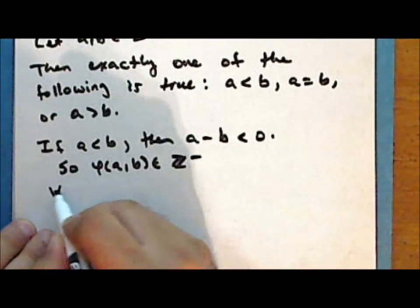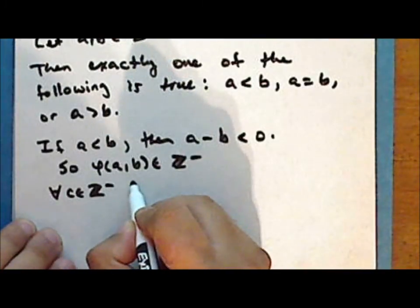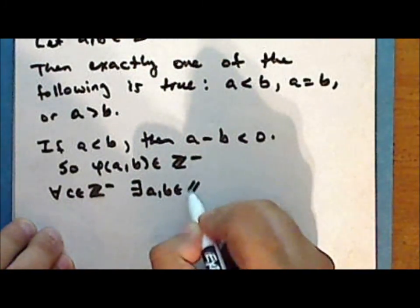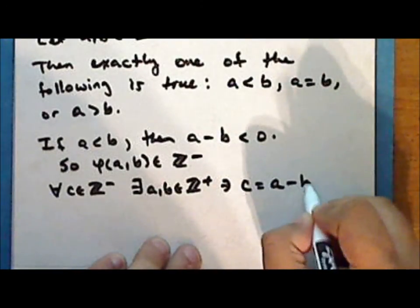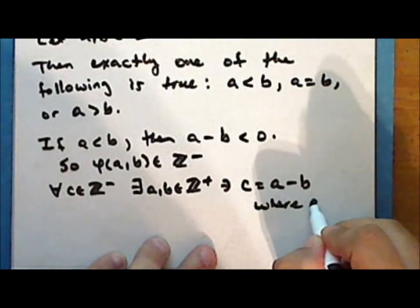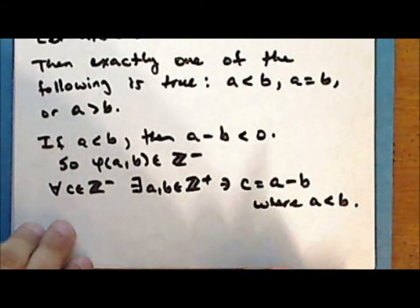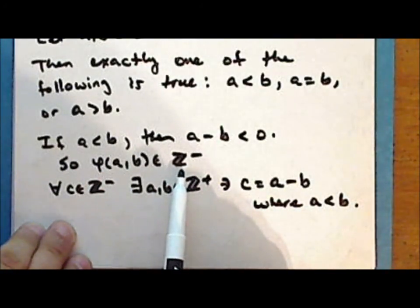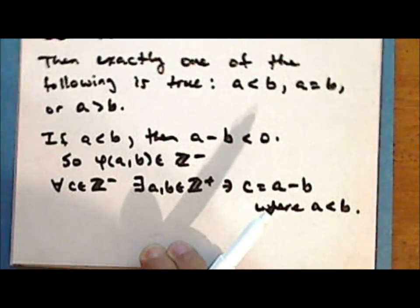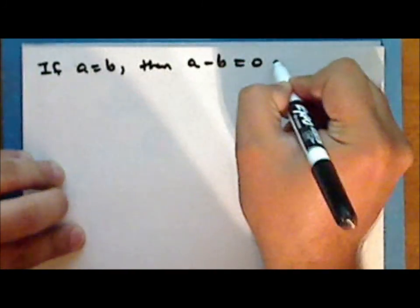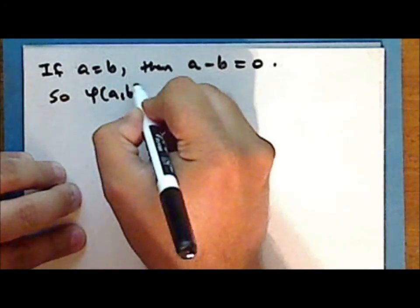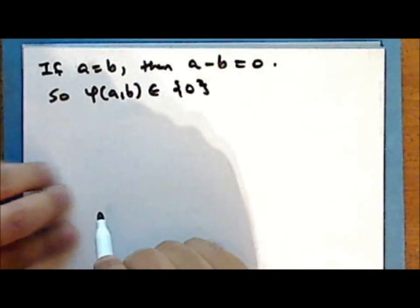In fact, for every negative integer, there exist positive integers A and B such that the negative integer C can be written as A − B where A < B. In other words, the entire set of negative integers is part of the range of this function. Now if A = B, then A − B = 0, and so the function produces an element in the singleton containing the number 0.